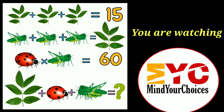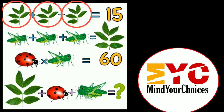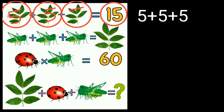I'm going to solve equation 1. As you can see, here are 5 leaves, here also 5, and here also 5. 5 plus 5 plus 5 is equal to 15, so the value of each leaf is equal to 5. Equation 1 is solved.